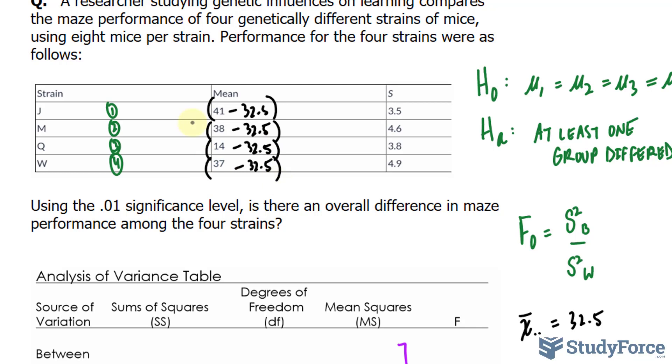Once you've subtracted each of these values by 32.5, you then multiply it by the number of individuals in each group, and we're told that it is 8. So we multiply this by 8, and we also square whatever's inside the parentheses. So we square the difference for each, and add them all up.